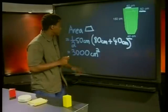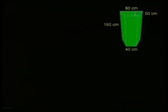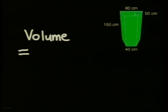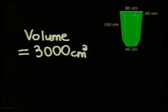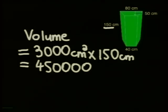Now let's substitute this area into our formula for volume. Since this is a right prism, the volume of our trapezoidal prism will be equal to the area of the base, which we found to be 3000 centimeters squared, multiplied by the height of the prism, which is 150 centimeters, which is equal to 450,000 centimeters cubed.